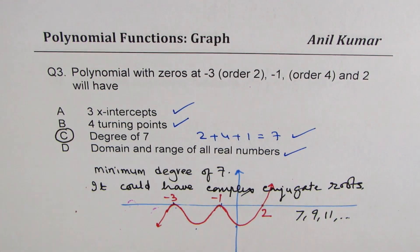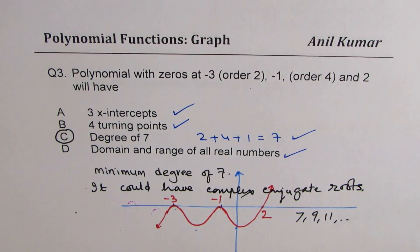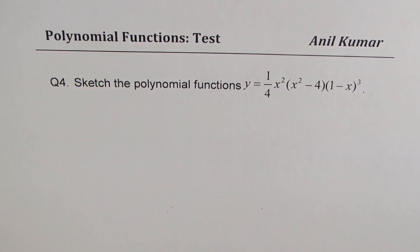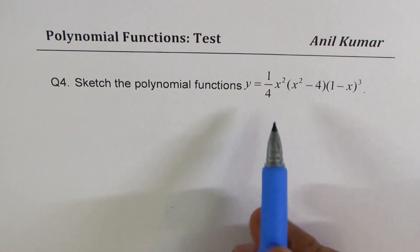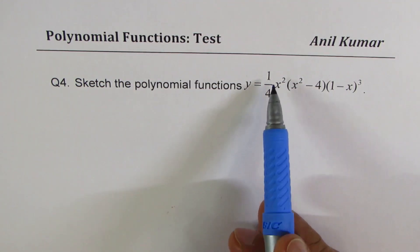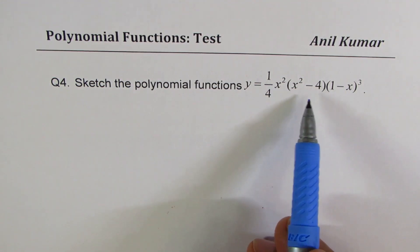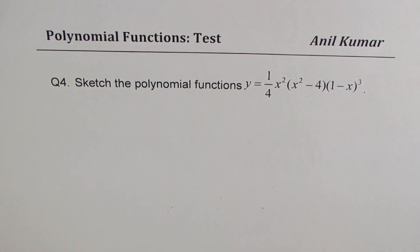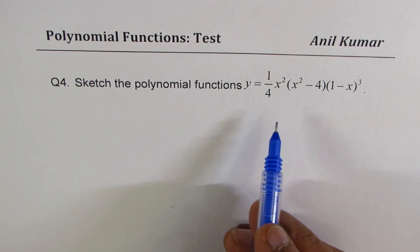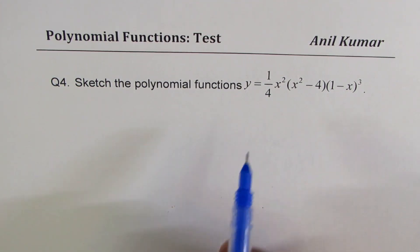I hope you understand and appreciate it. Thanks for watching — feel free to write your comments and share your views. Now question number 4: we will sketch a polynomial — y equals 1 over 4 times x squared times (x squared minus 4) times (1 minus x) cubed.